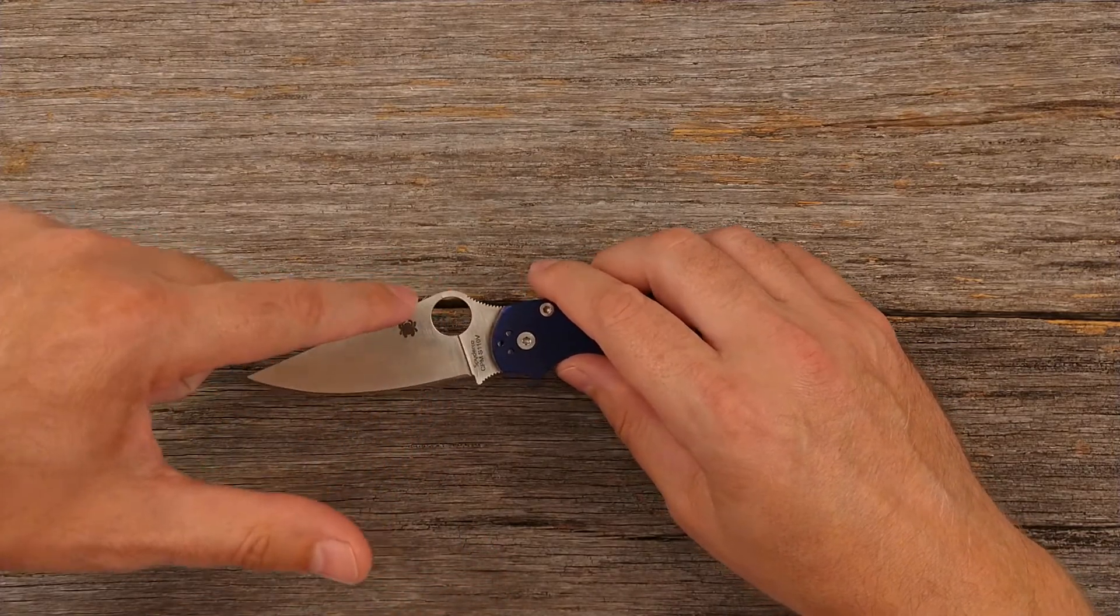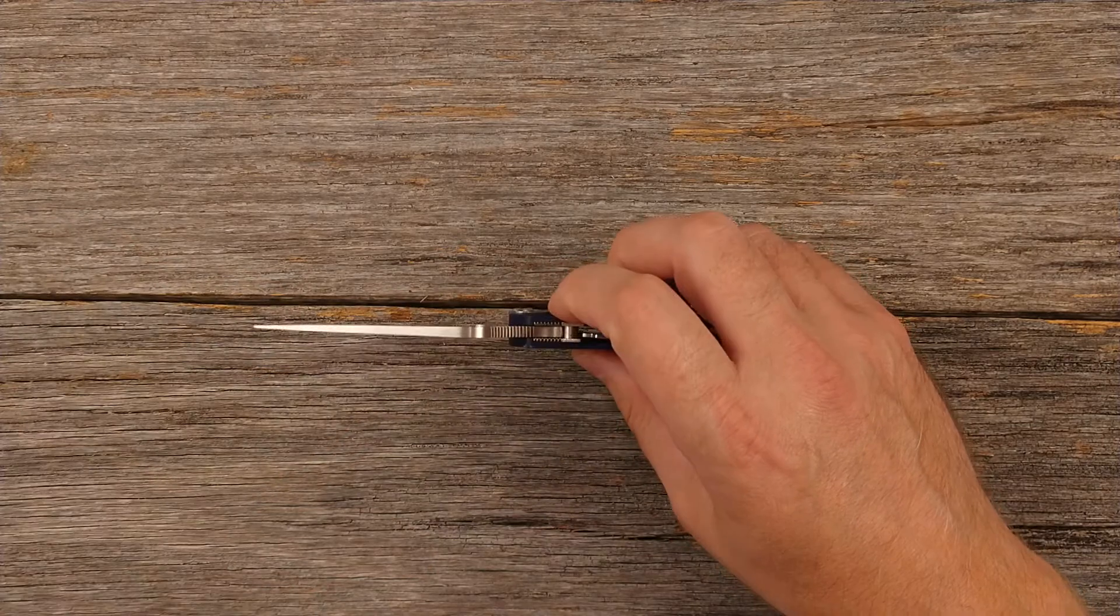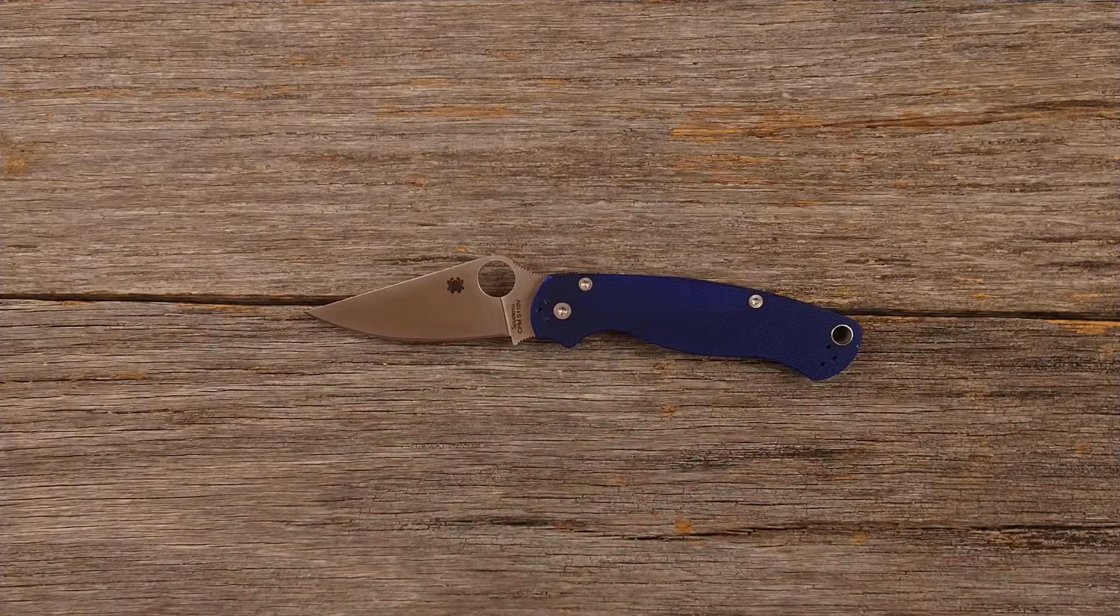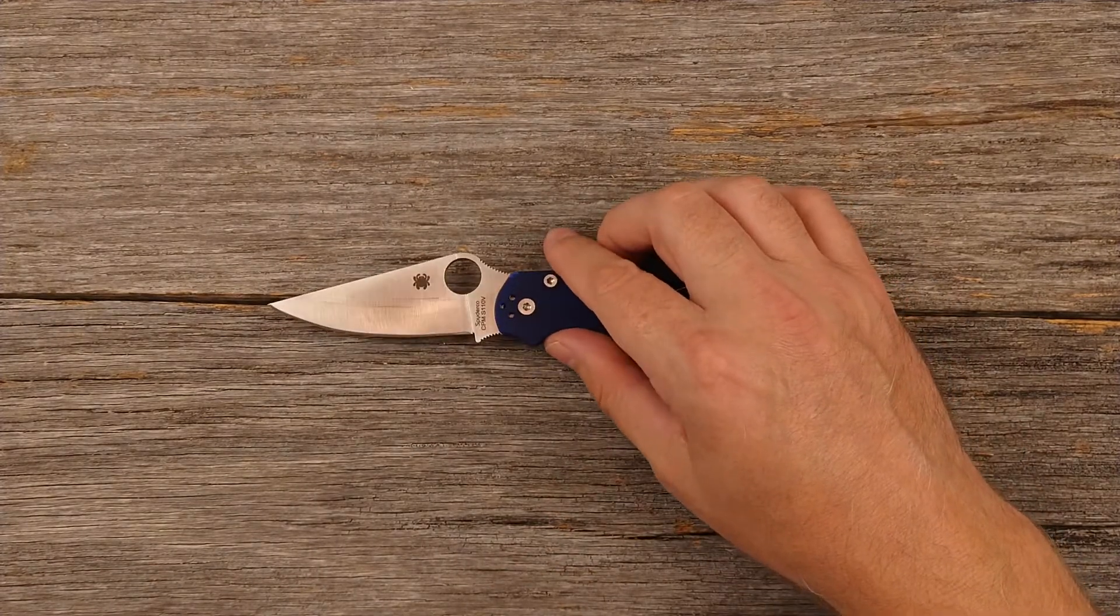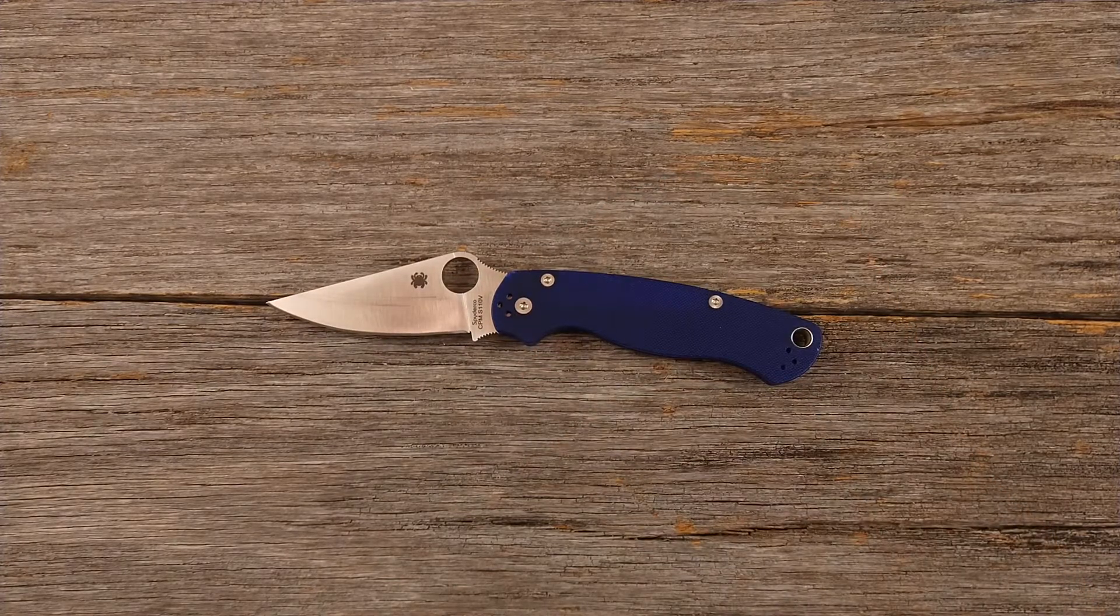And then it actually tapers all the way out to the very spine of the knife where you have a little bit of a mark there where you can see where that grind goes all the way up. So I do like the full flat grind. That makes a very good slicing knife, being able to have that flat grind the whole way up there.